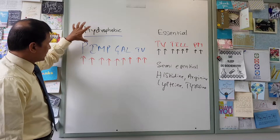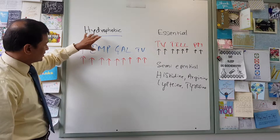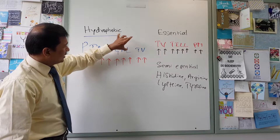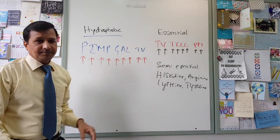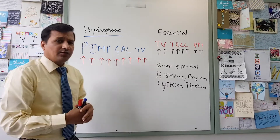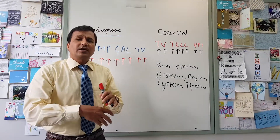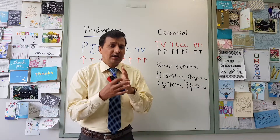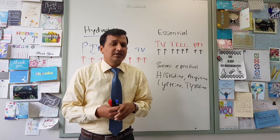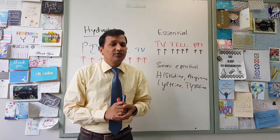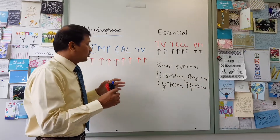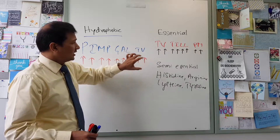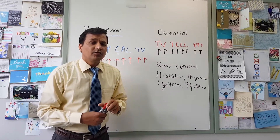So the hydrophobic amino acids are phenylalanine, isoleucine, methionine, proline, glycine, alanine, leucine, tryptophan, and valine — that is 9 hydrophobic amino acids out of 20. If you remember the hydrophobic amino acids, you know which ones are hydrophilic, because anything other than these will be hydrophilic amino acids.